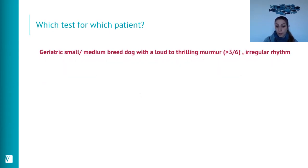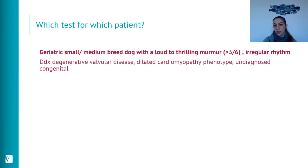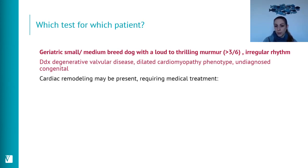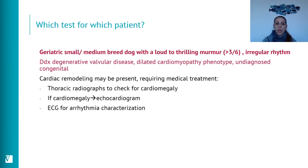Scenario 5: a geriatric small breed dog with a loud thrilling murmur and an irregular rhythm. Two things need investigation: the murmur and the arrhythmia. Cardiac remodeling is likely if there is an irregular rhythm, suggesting significant cardiac strain. Thoracic radiographs, echocardiography, and ECG are all needed — the ECG is necessary to characterize the arrhythmia (atrial versus ventricular, etc.).